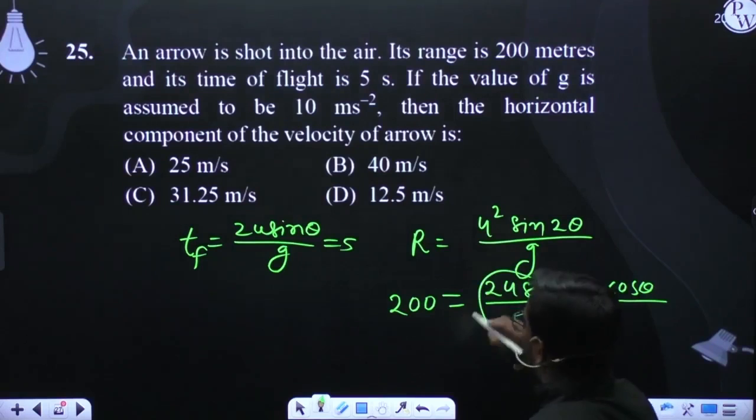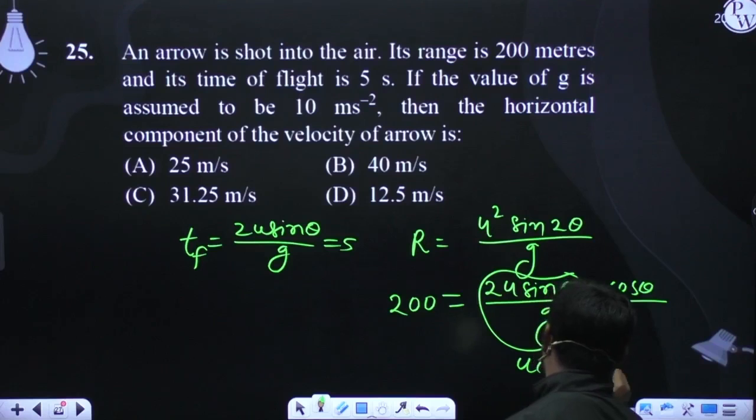This is time of flight? It's 5. So u cos theta is the horizontal component. So 200 divided by 5, what is this?